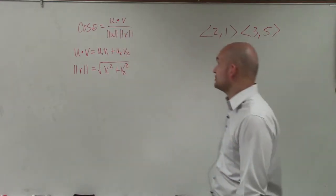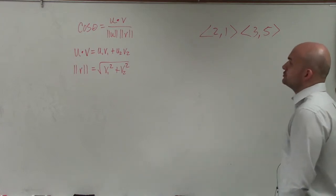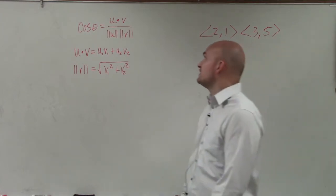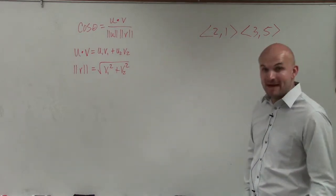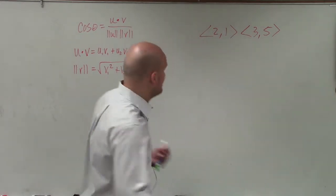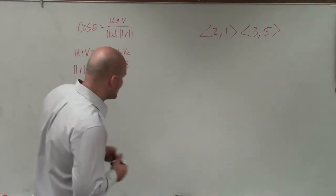And I have the formula for the angle between two vectors, which is cosine of theta equals the dot product of our vectors u and v, divided by the magnitude of u times the magnitude of v. So what I want to do is solve each one of these separately.